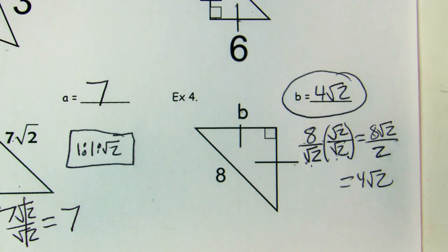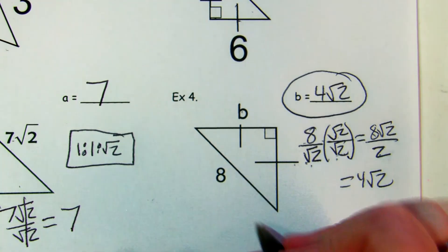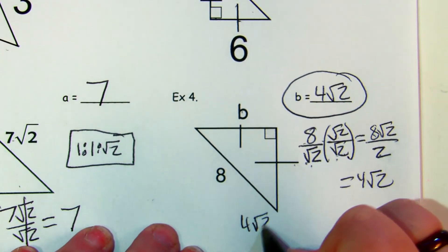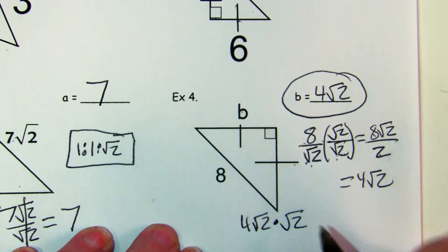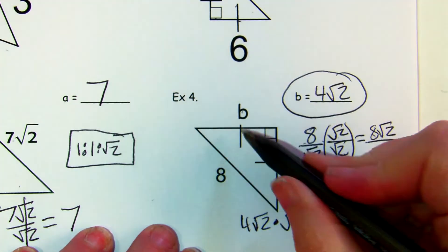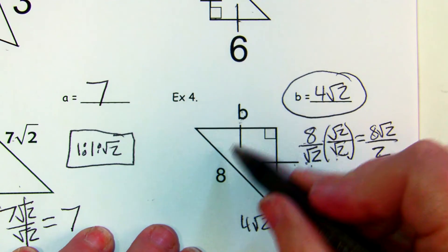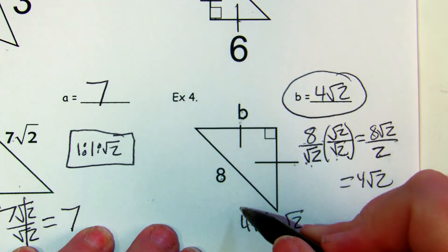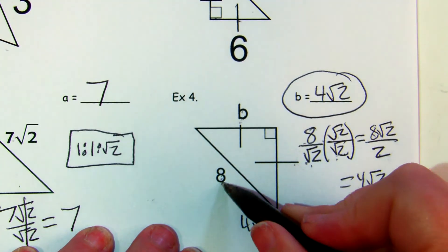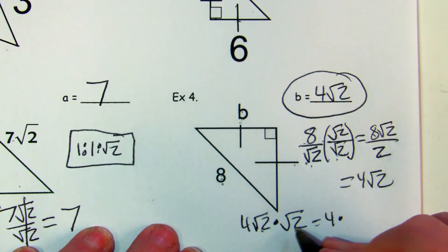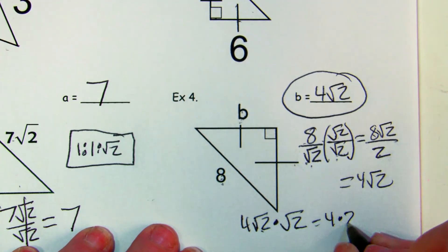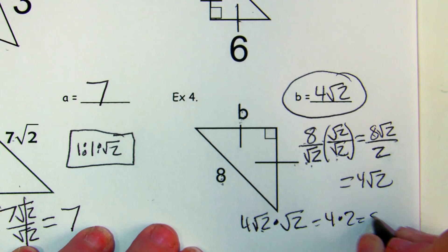To check: take leg 4√2 and multiply by √2 to get the hypotenuse. You get 4 × √2 × √2 = 4 × √4 = 4 × 2 = 8, which matches. So b = 4√2 is confirmed.